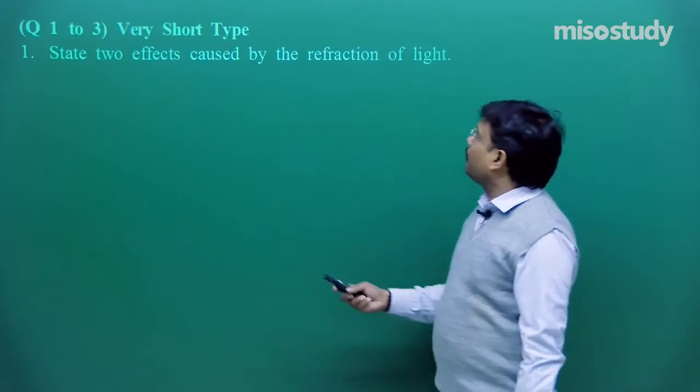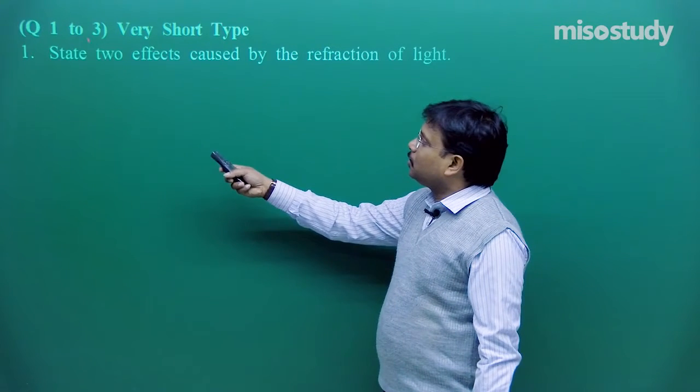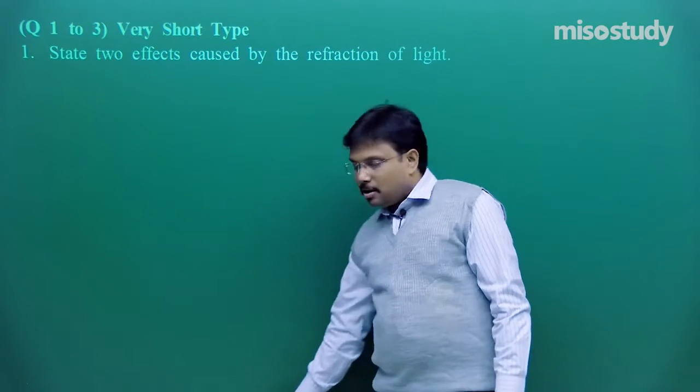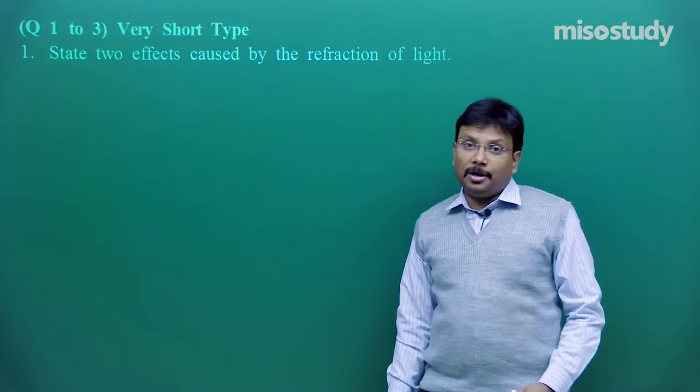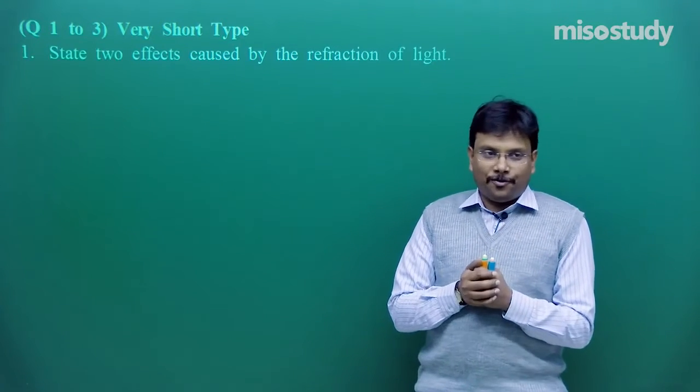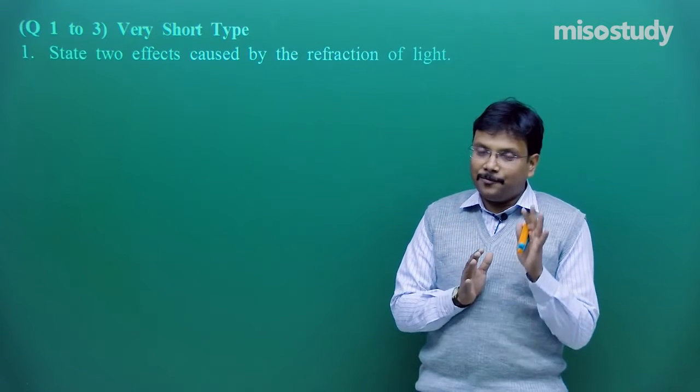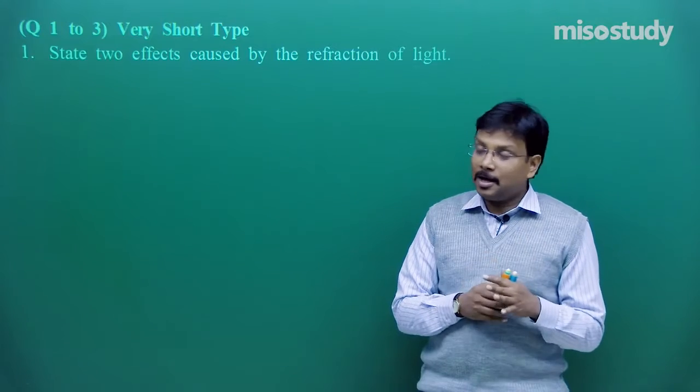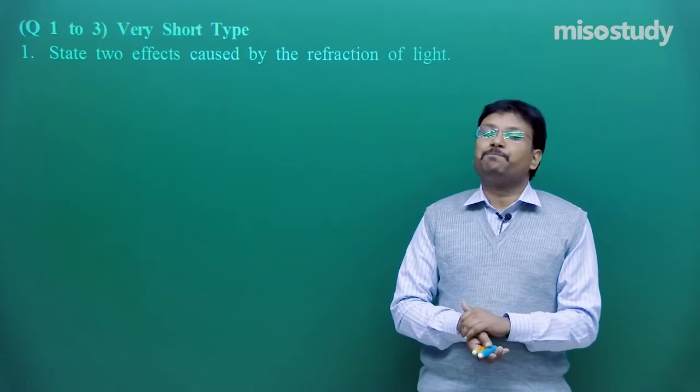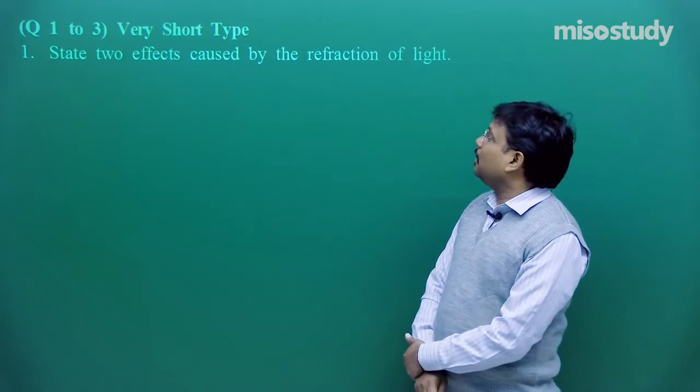Let us consider question number 1, 2, 3. Question 1, question number 2, question number 3, they are very short answer type questions. Once again, the same method. You have to please consider this idea that at any point of time you should not waste your time with a very simple question, otherwise long numericals, hots, high order thinking skill questions are going to be difficult for you to answer.